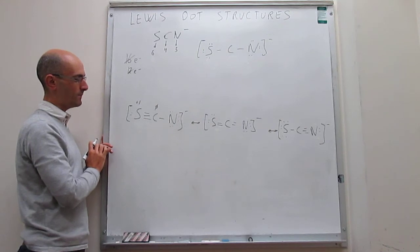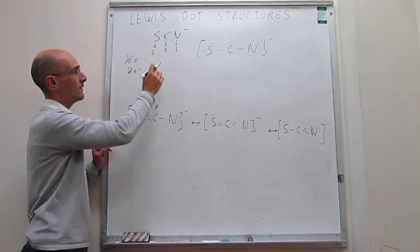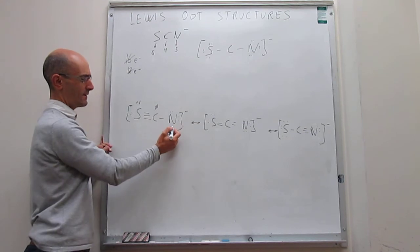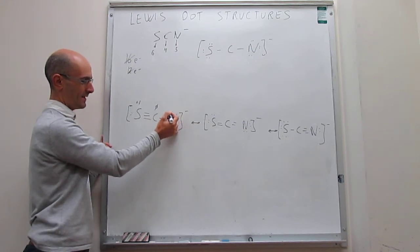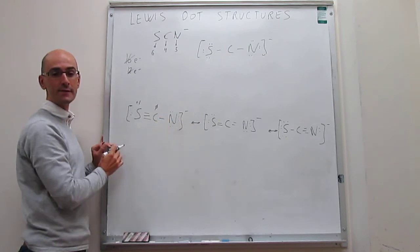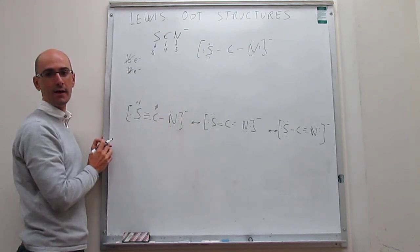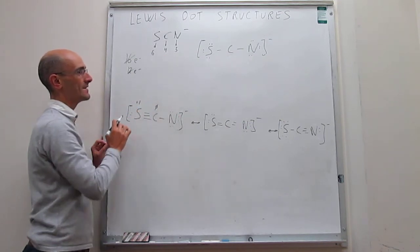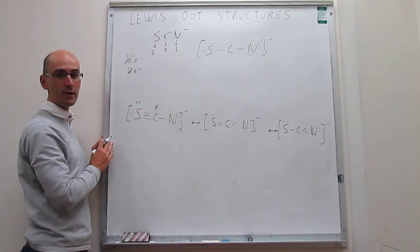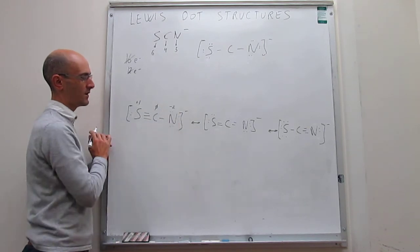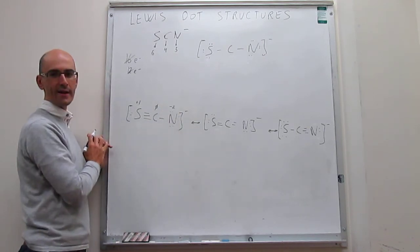For nitrogen, we have five valence electrons. In this Lewis dot structure you have two, four, six lone pair electrons, and then half of one bond pair, giving a total of seven electrons belonging to nitrogen. Comparing seven to five, that is an excess of two electrons, meaning a formal charge of minus two for nitrogen in this first structure.